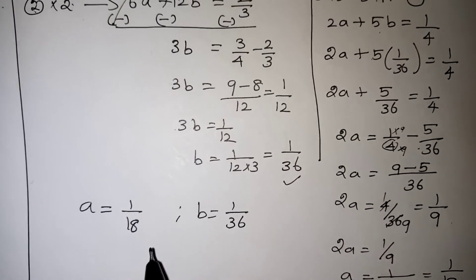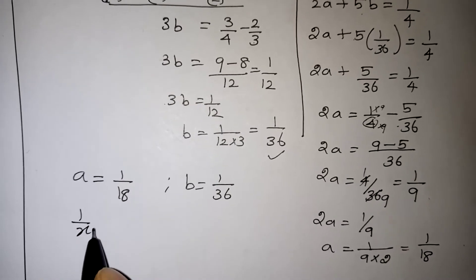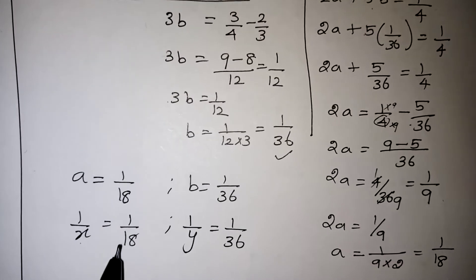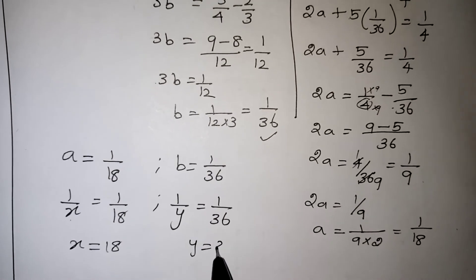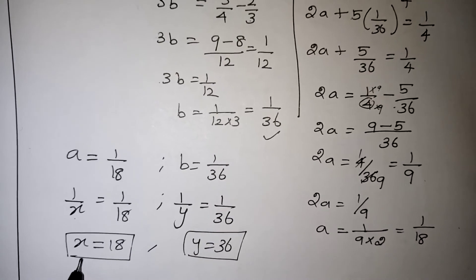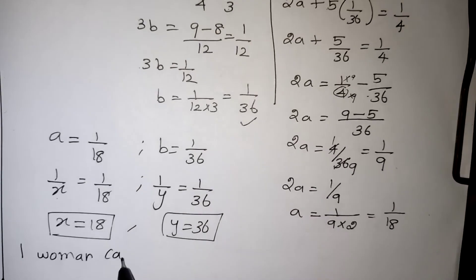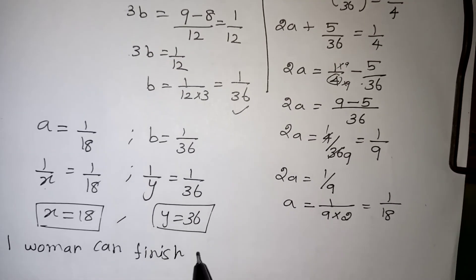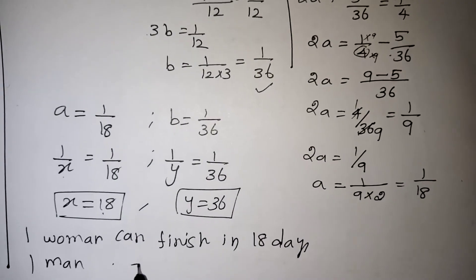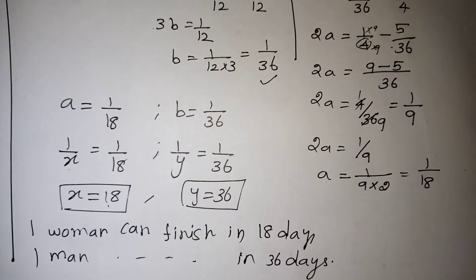Our question was about variables x and y. Since a = 1/x = 1/18, we get x = 18. Since b = 1/y = 1/36, we get y = 36. So 1 woman can finish the work in 18 days and 1 man can finish the work in 36 days. That is the correct solution. Thank you for watching — if you like our video, subscribe to our channel for more videos.